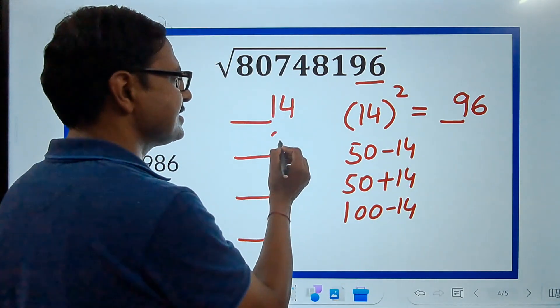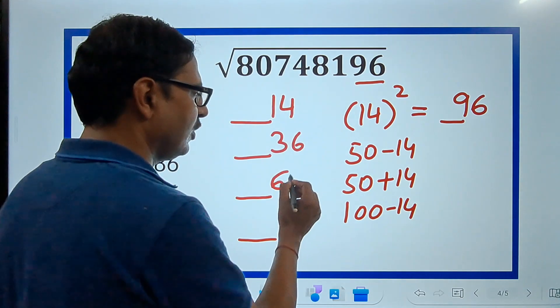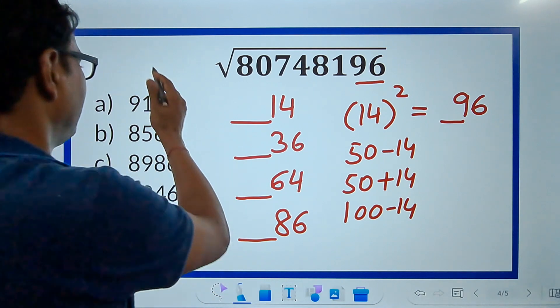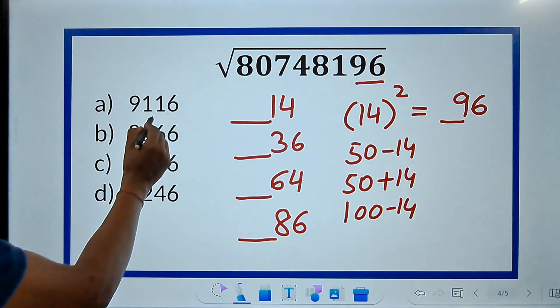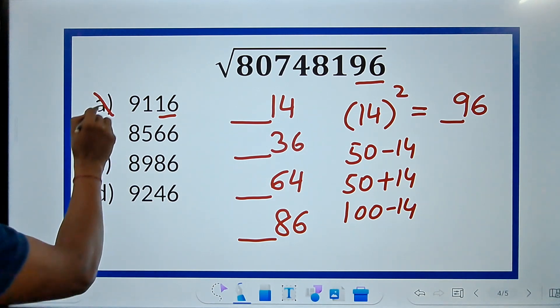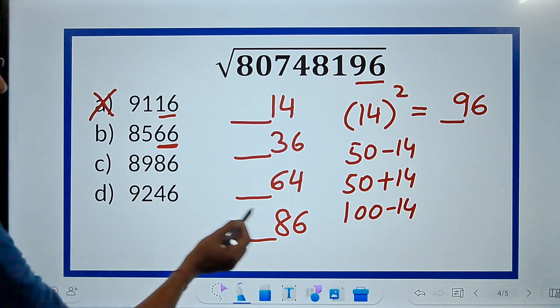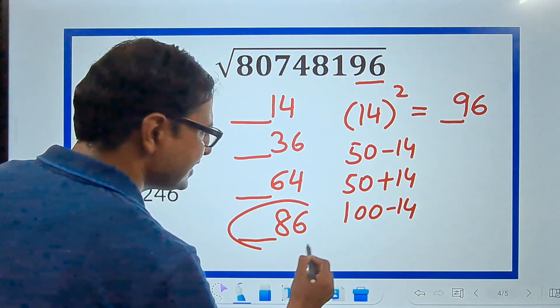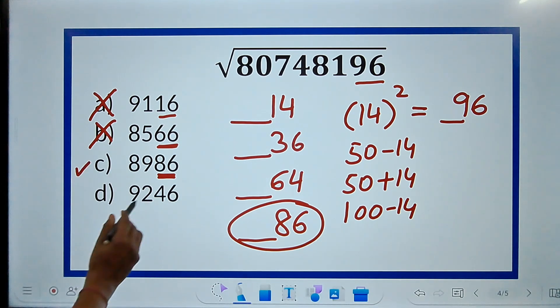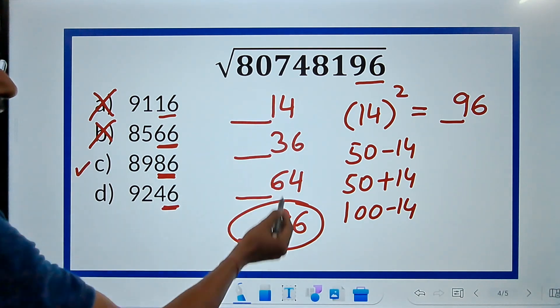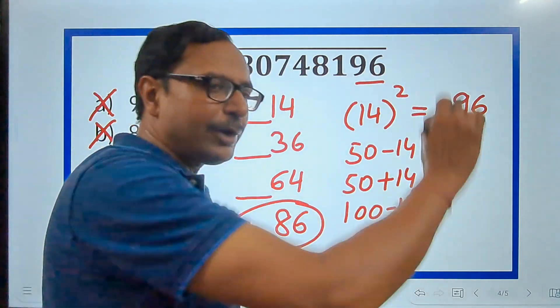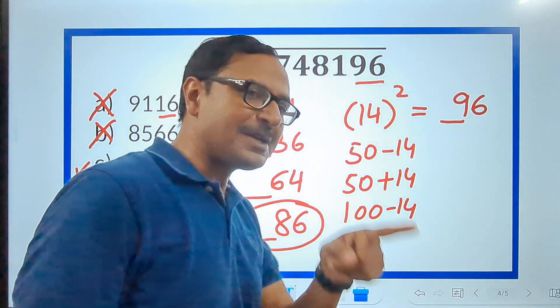So, what is this? This is 36. What is this? This is 64. And what is this? This is 86. So, among these, which one is the correct answer? 16. Is it a possibility? No. 66. Is it a possibility? Still no. 86. Is it a possibility? Oh, yes. It is a possibility. So, this can be one of the options. 46. Is it a possibility? No. And check, pick up your calculator and check. 8986 square. Is it 80748196? And you will be surprised to see the result.